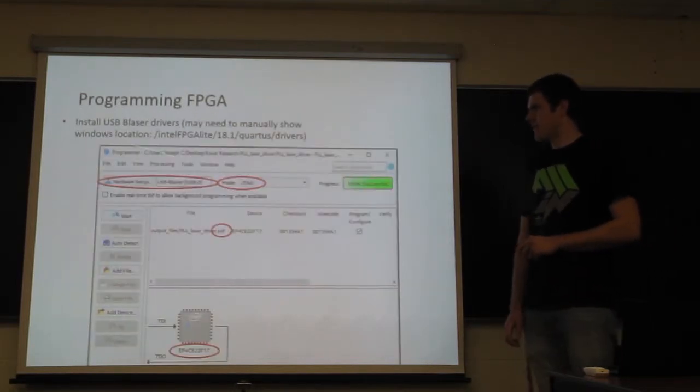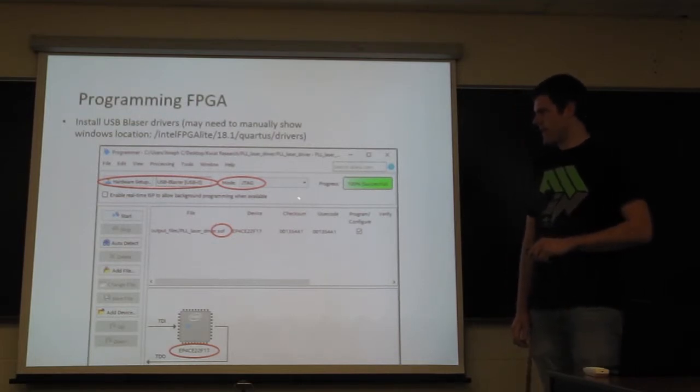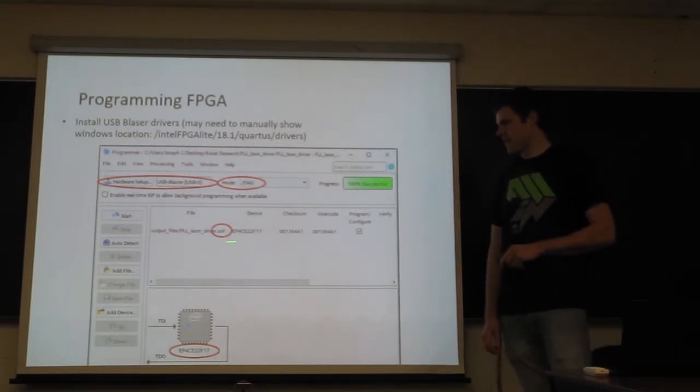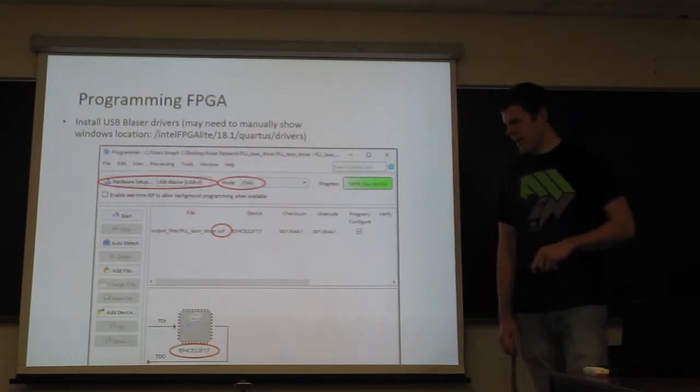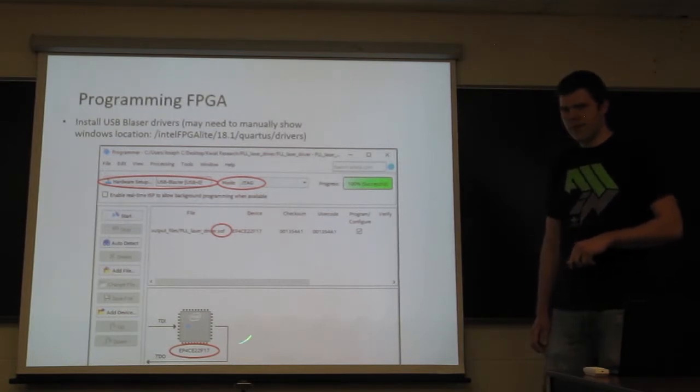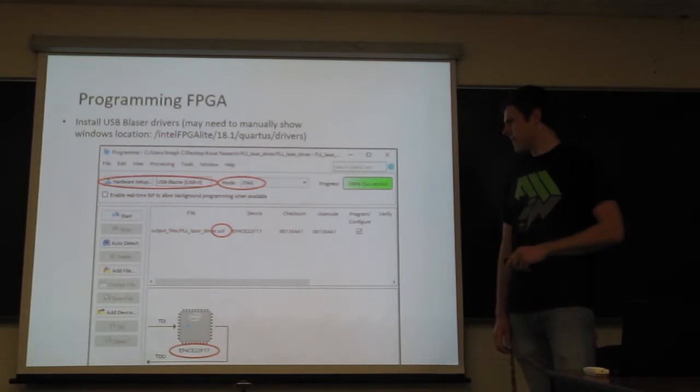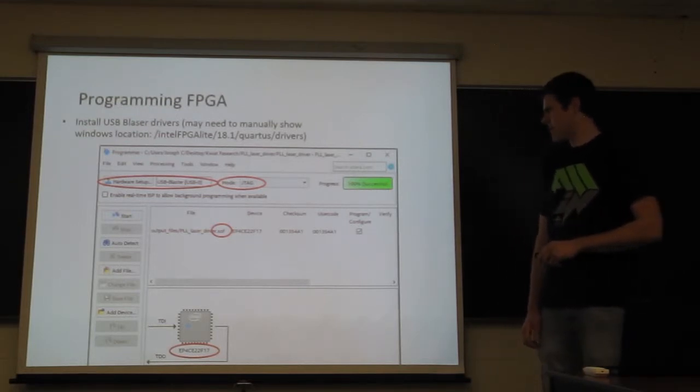To program it, make sure you have the USB drivers installed, that the hardware is set up, and that you're programming in JTAG. Additionally, make sure you're using the SOF file, and that the target device is the same serial number as your device. After you have all that set up, then you can start the program, and it should load on to be successful.